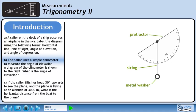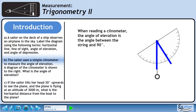In the diagram, we have a protractor, a string, and a metal washer that hangs down. When reading a clinometer, the angle of elevation is the angle between the string and 90 degrees. It's the same idea for the angle of depression.